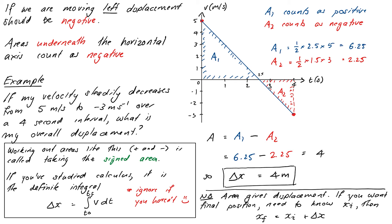What we just did was explore the mathematical relationship between velocity and displacement. It should now come as no surprise that we can do the same thing to work out velocity from acceleration — by taking signed areas underneath acceleration graphs — because the mathematical relationship between velocity and acceleration is the same as between displacement and velocity.